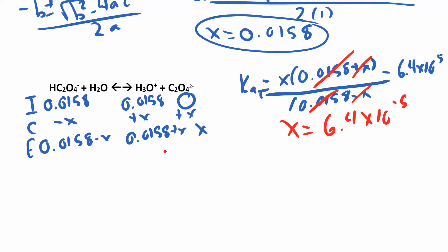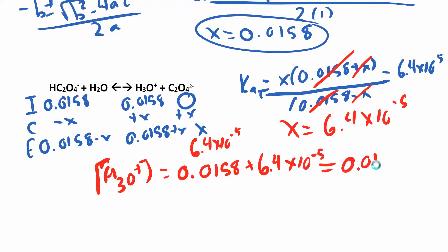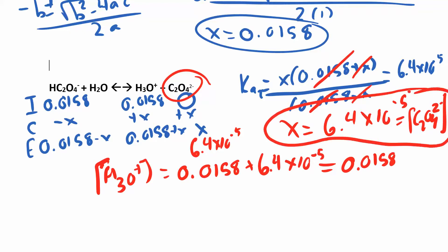Now if you go over to this ICE table, this is what x is: x is 6.4 times 10 to the negative 5. Your hydronium concentration is what we need to find the pH. It's going to be what we started with, 0.0158, plus the 6.4 times 10 to the negative 5, which works out to be 0.0158. So this number, this 6.4 times 10 to the negative 5, that's the C2O4 2- concentration which they asked for in part b. Yes, you do want to put a box around that number.